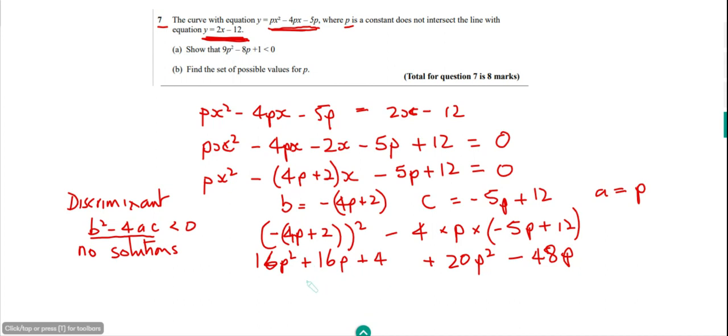So we're just going to tidy all that up. So we've got 36P squared. And then we've got minus 32P plus the 4. And this must be less than 0 if there's no solutions. So it says it doesn't intersect. So in fact, we can't have a solution to this. There'll be no values of X for the value of P that we're going to find. So for this discriminant, if it's less than 0.